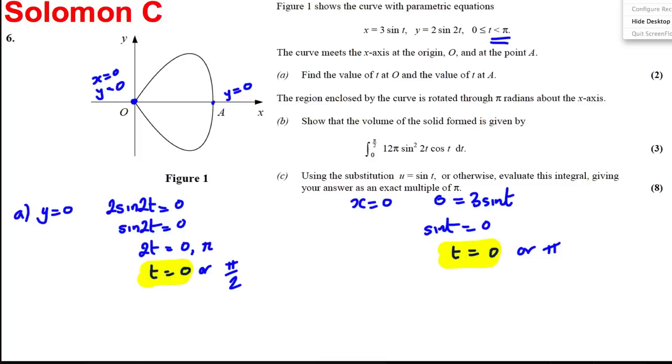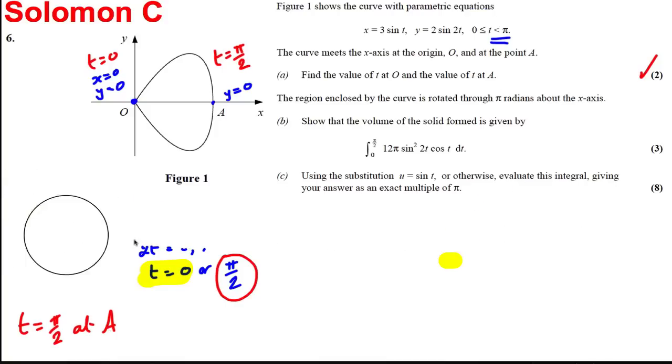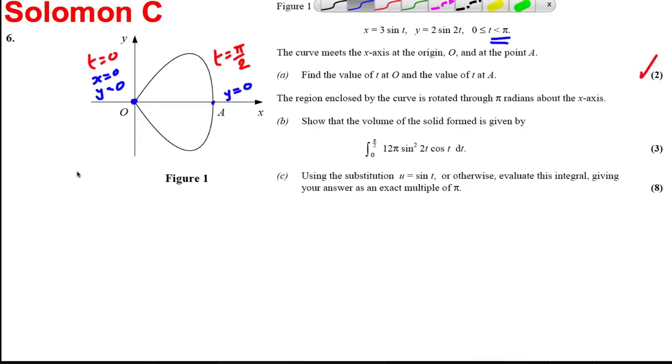This tells us that t is equal to 0 or π. Which one is true in both cases? Well, t must be 0 at the origin. At the origin t must be 0, which means that the only thing left to be true is for y to be equal to 0 at point A. It must be π/2, so t equals π/2 at A.